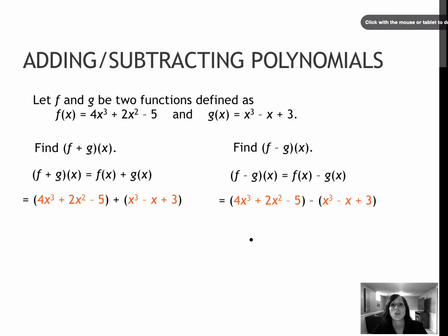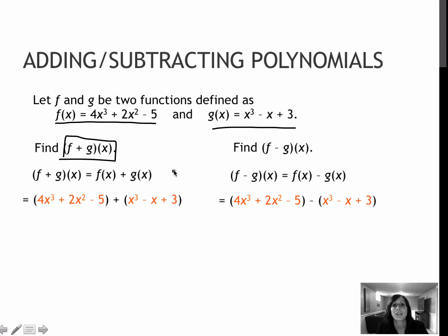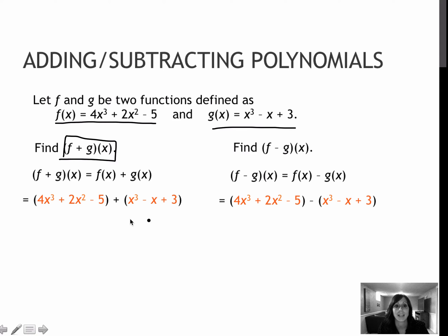Here are a couple for us to try together. Notice that these are written a little differently — this is the function f of x and this is the function g of x, and they're asking me to find f plus g of x. f plus g of x means take my f of x function and add my g of x function. We know with addition those parentheses don't really mean anything, so I'm going to combine like terms. 4x to the third and 1x to the third gives me 5x to the third.